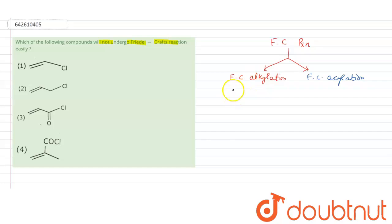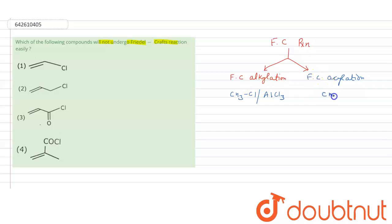In alkylation, benzene reacts with an alkyl reagent such as CH3Cl in the presence of AlCl3. In acylation, CH3COCl is used in the presence of AlCl3. The AlCl3 must be anhydrous — that is the primary condition for carrying out the Friedel-Crafts reaction.